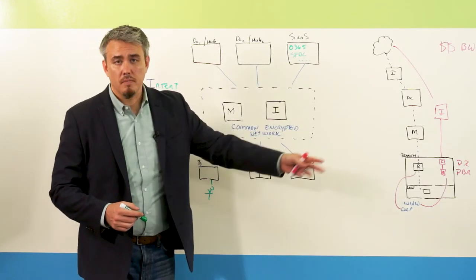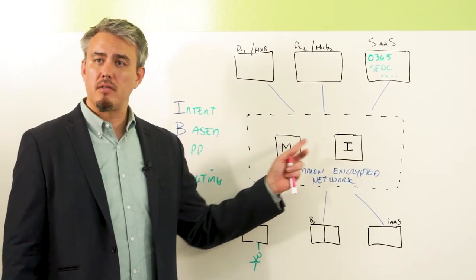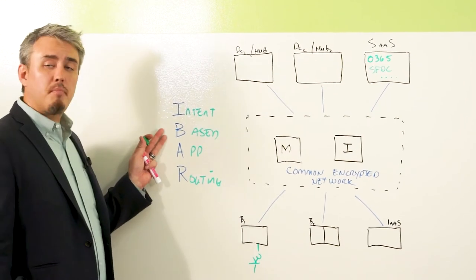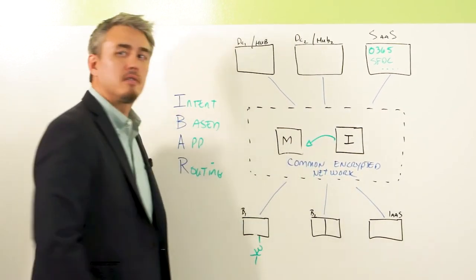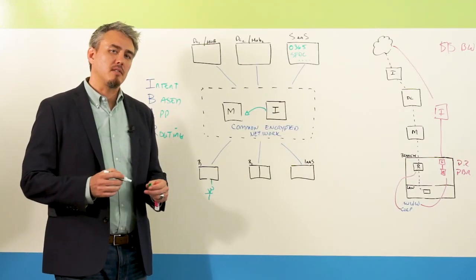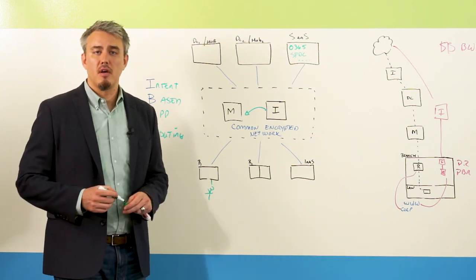In the previous world, manual intervention was required to move that traffic from internet to MPLS. But across this common network, utilizing an intent-based application routing infrastructure, this is automated—simplifying and reducing complexity to ensure you have the best possible application experience for all of your users.